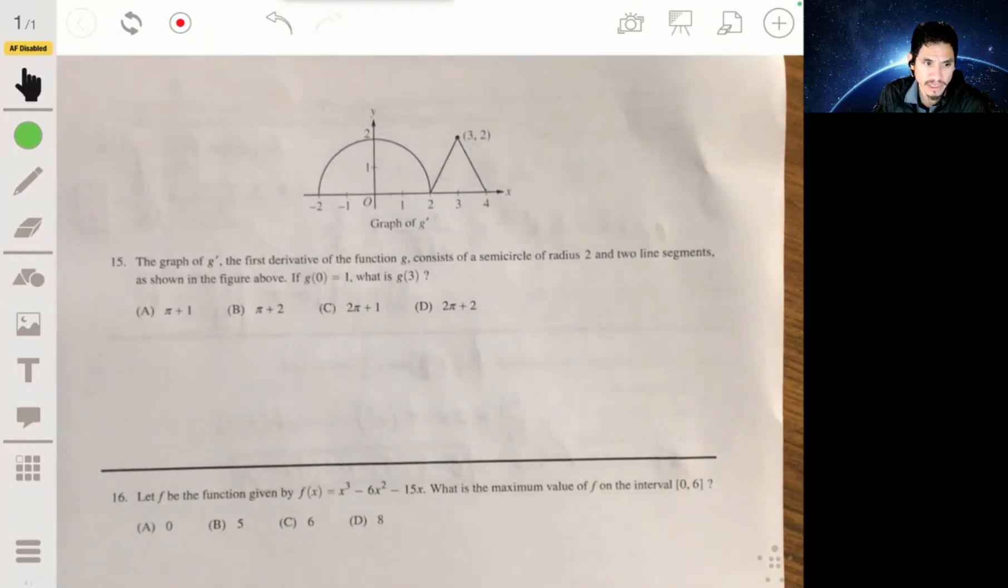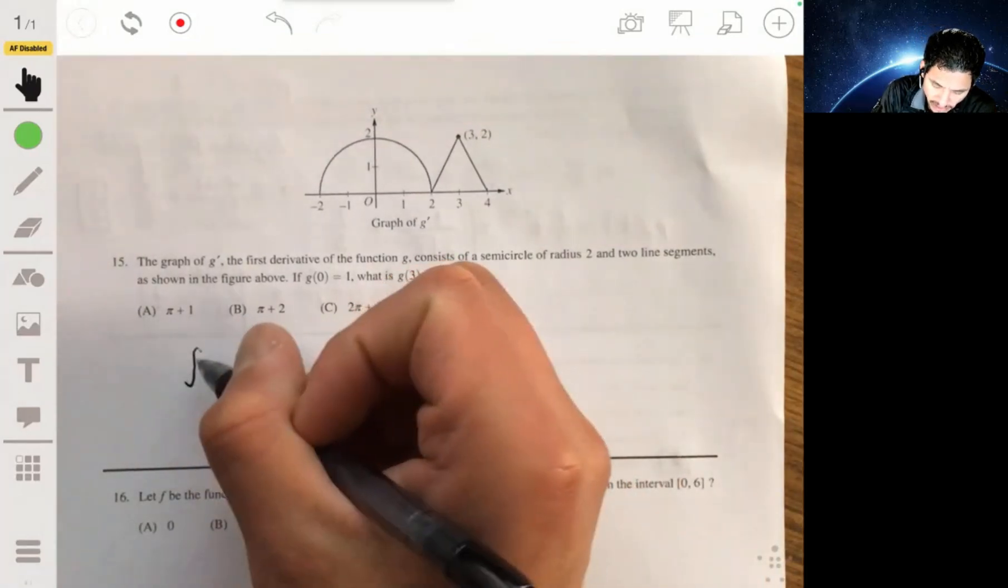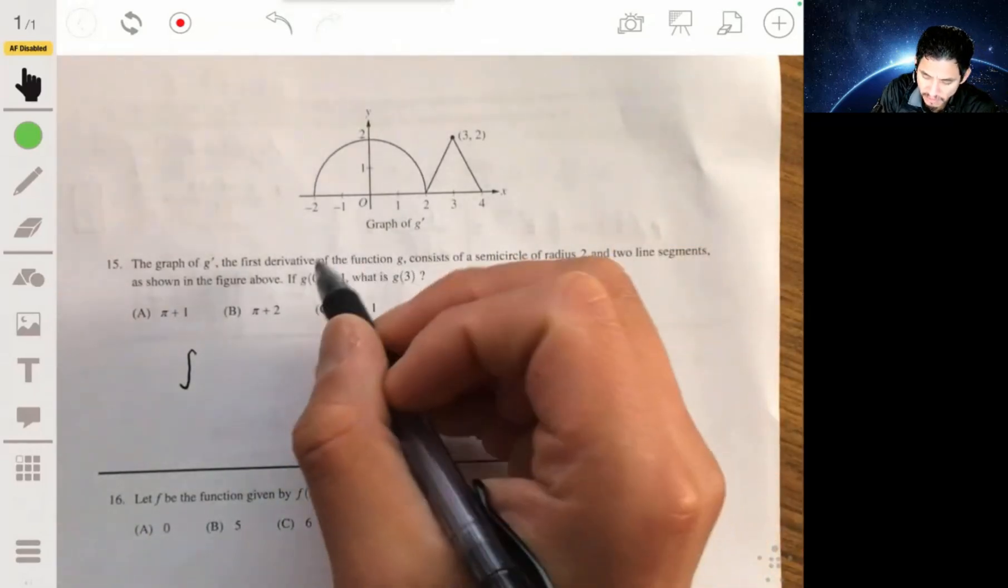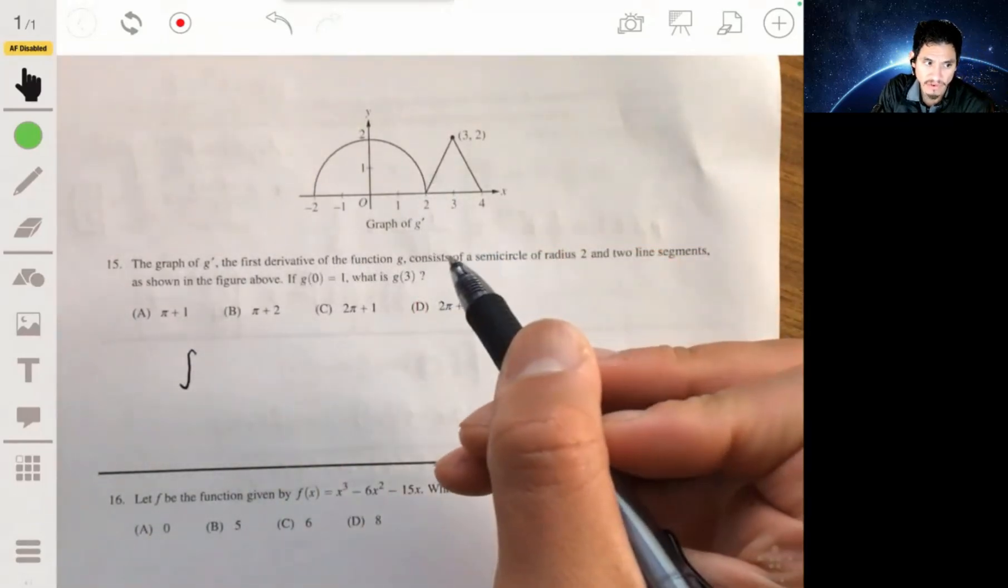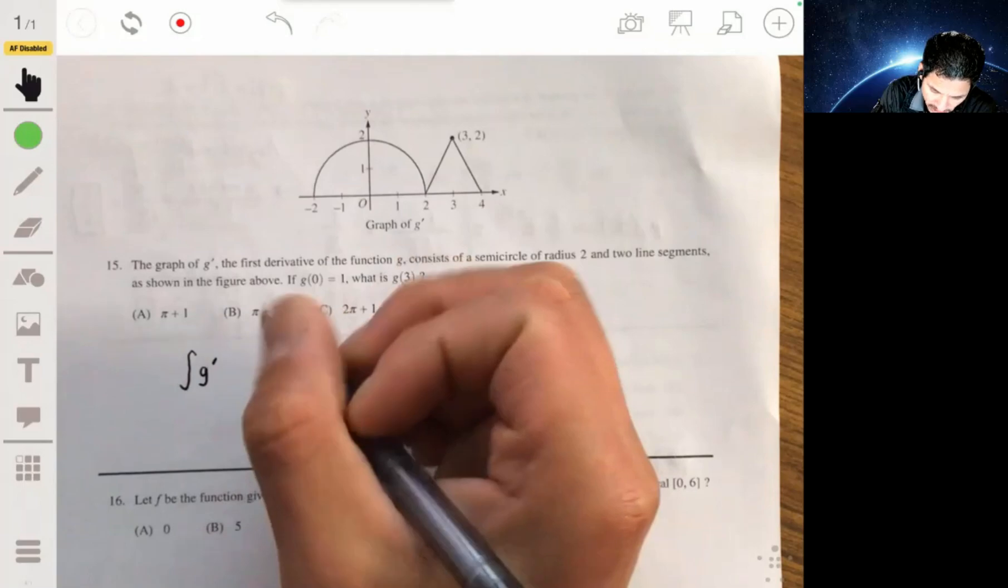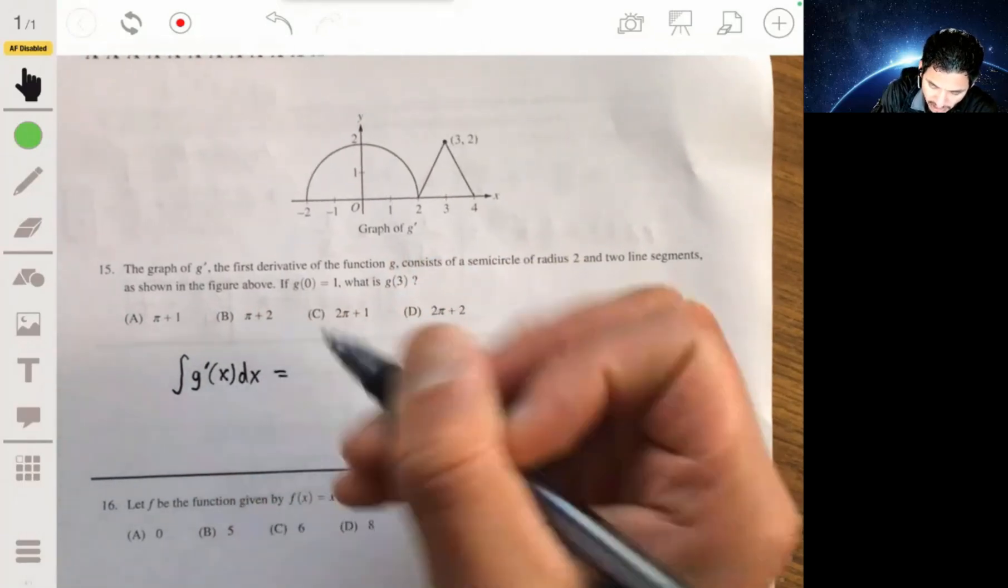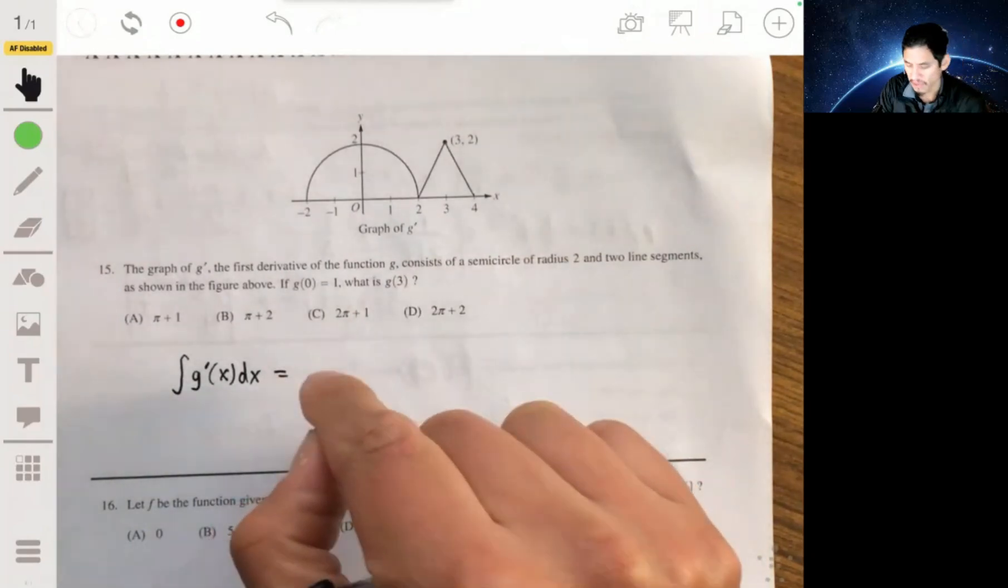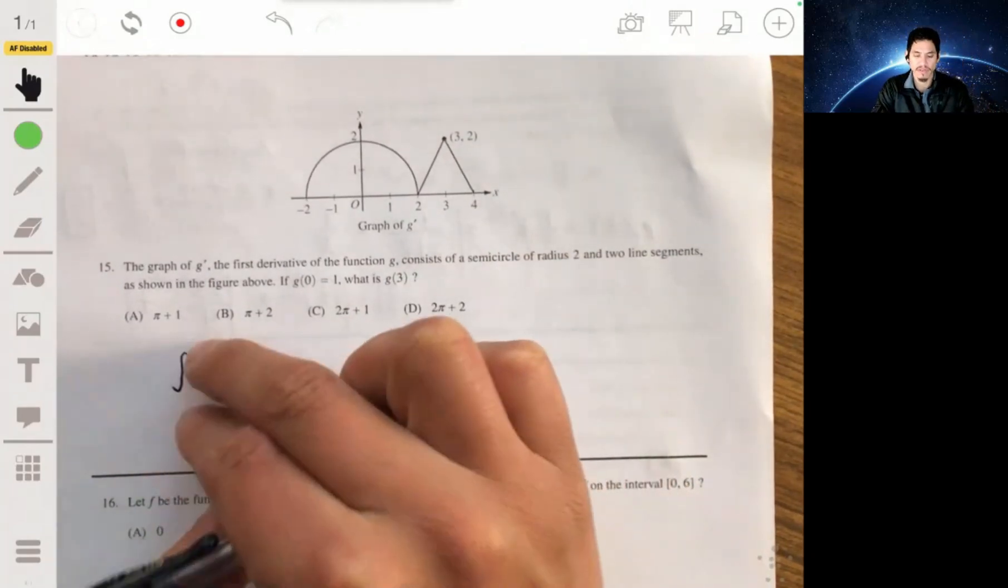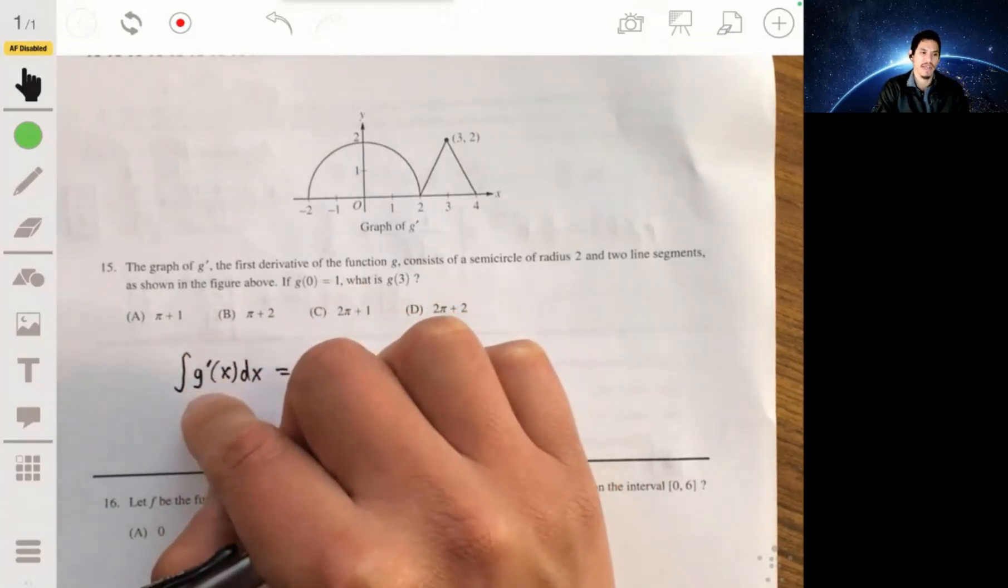The trick here is to recognize that you can find the function values by integrating the derivative. Remember that when you integrate G prime of x dx, you're going to get G of x, and if you do a definite integral, you're going to get G of B minus G of A.